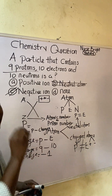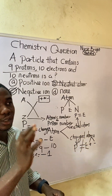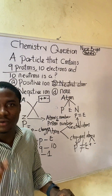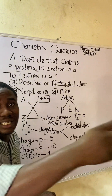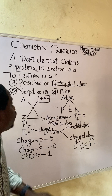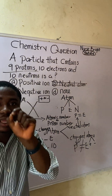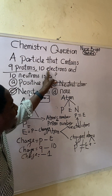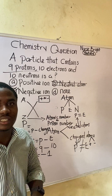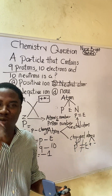Here is a quick trick: whenever the electron number is higher than the proton number, the atom is a negative ion. If the proton number is higher than the electron number, the atom is a positive ion. This is extremely easy. That brings us to the end of this video lesson — please subscribe and share with your friends.